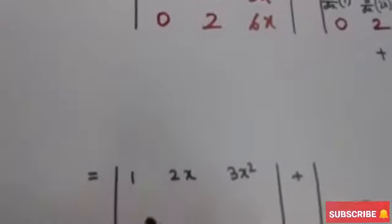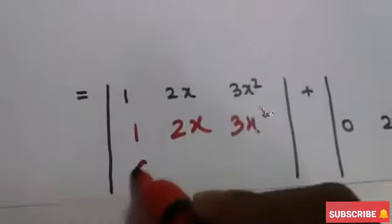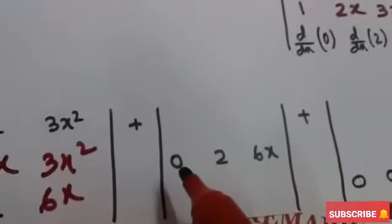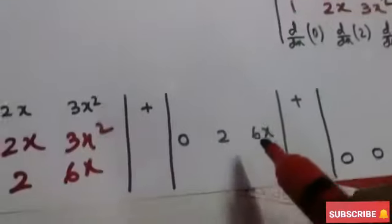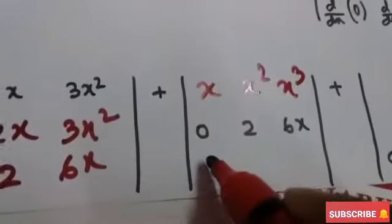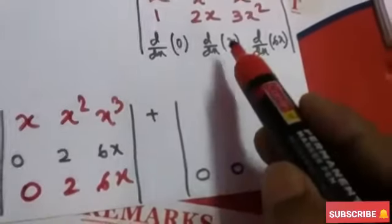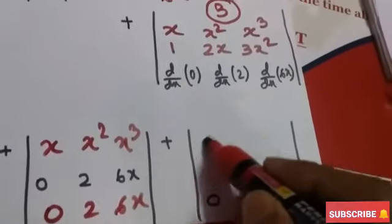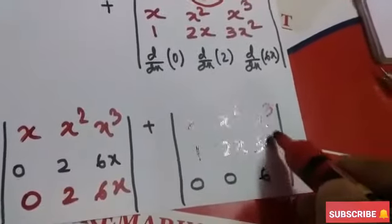Computing the results: d/dx of x = 1, d/dx of x² = 2x, d/dx of x³ = 3x², with second and third rows 1, 2x, 3x² and 0, 2, 6x unchanged. For the second determinant: d/dx of 1 = 0, d/dx of 2x = 2, d/dx of 3x² = 6x, with first row x, x², x³ and third row 0, 2, 6x unchanged. For the third: d/dx of 0 = 0, d/dx of 2 = 0, d/dx of 6x = 6, with first row x, x², x³ and second row 1, 2x, 3x² unchanged.